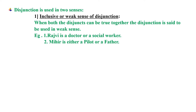Disjunction is used in two senses. First is the inclusive or weak sense of disjunction. When both the disjuncts can be true together, the disjunction is said to be used in weak sense. Example: Rajvi is a doctor or a social worker. That is, when we affirm the first disjunct, there is no need to deny the second.